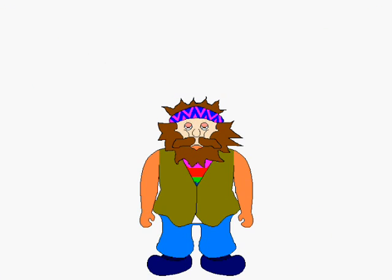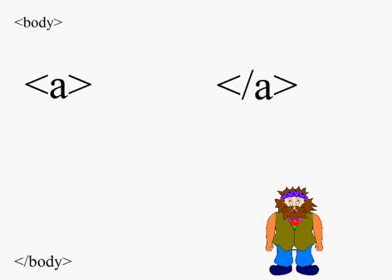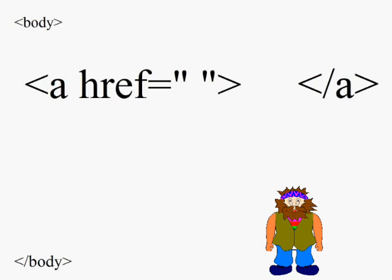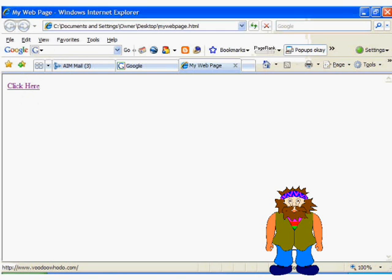I'll remind you of how to make a simple link to my favorite website. We focus in between the body tags again and add in our anchor tags. The anchor tag tells the browser to anchor a command around a block of text. To tell it we want it to link to another web page, we put in the href element followed by the equals sign and two quotes. We then put in the URL, including http://www.voodoohoodoo.com, in between the quotation marks. We add the block of text we want the link anchored around between the opening and closing anchor tags, then save it. When we open it up in our browser, we can see that our link shows up in blue and is underlined.